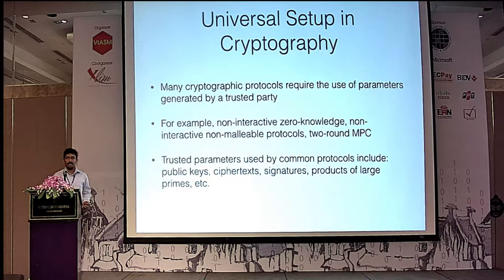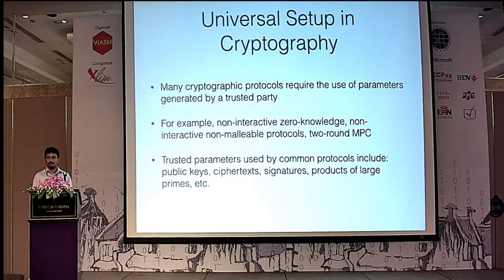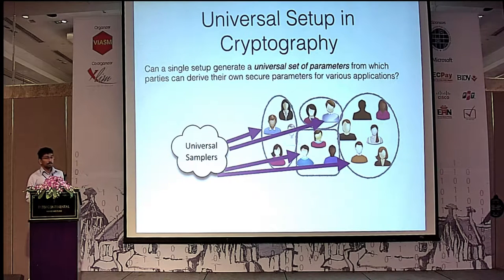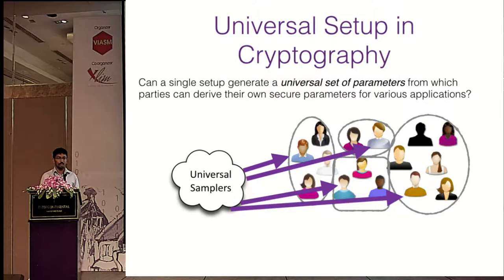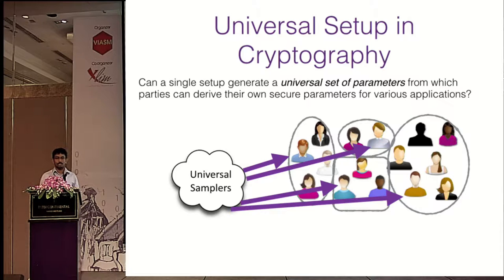The drawback of this setting is that every time you want to run a cryptographic protocol, you need to contact this trusted party and request setup parameters. If a few of us want to do it, we again have to contact the trusted party. Every new instantiation requires back and forth communication. The motivation is: can there be a universal set of parameters given by the trusted party once and for all, so it only needs to be online once initially and then can go offline?